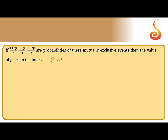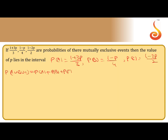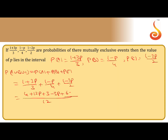P(A) = (1 + 3p)/3, P(B) = (1 − p)/4, P(C) = (1 − 2p)/2. So P(A ∪ B ∪ C) = P(A) + P(B) + P(C). Taking LCM as 12: (4 + 12p − 3 − 3p + 6 − 12p)/12. The 12p terms cancel, giving (13 − 3p)/12.